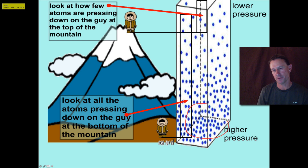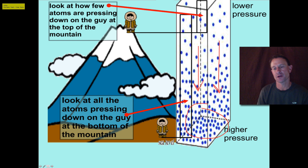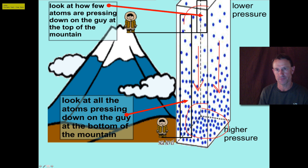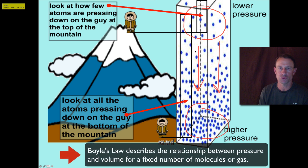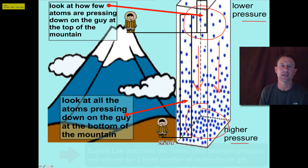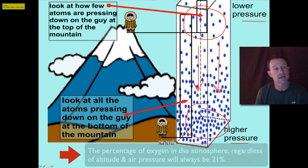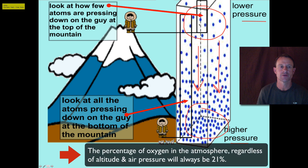At low elevation, the air pressure is going to be much higher because of all the molecules stacked up and pressing down, causing them to be more dense and creating a higher air pressure. In contrast, an important effect of lower air pressure is that in any volume of air there are going to be fewer molecules — this effect is referred to as Boyle's Law. Whether you're at a higher or lower elevation, the percentage of oxygen in the air is always the same: 21%. It's just that there are fewer molecules of everything present, so the thinner air simply means there are fewer oxygen molecules to breathe.